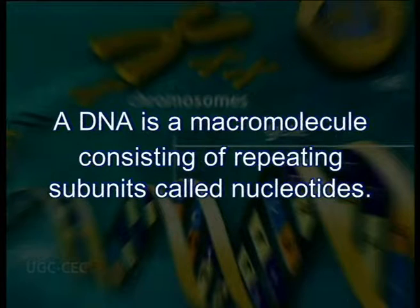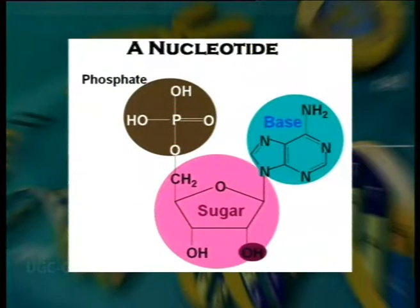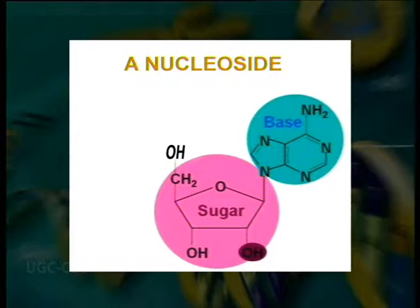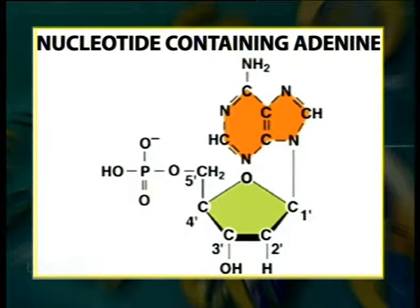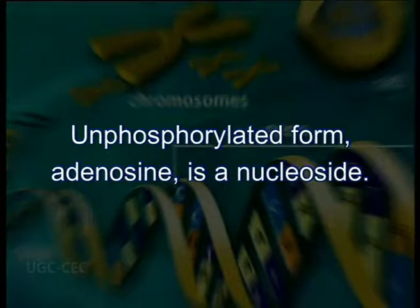DNA is a macromolecule consisting of repeating subunits called nucleotides. Nucleotides are composed of a pentose sugar, a nitrogenous base, and at least one phosphoryl group. Such a structure without a phosphoryl group is called a nucleoside. Thus, ATP and AMP are nucleotides, whereas the unphosphorylated form adenosine is a nucleoside.